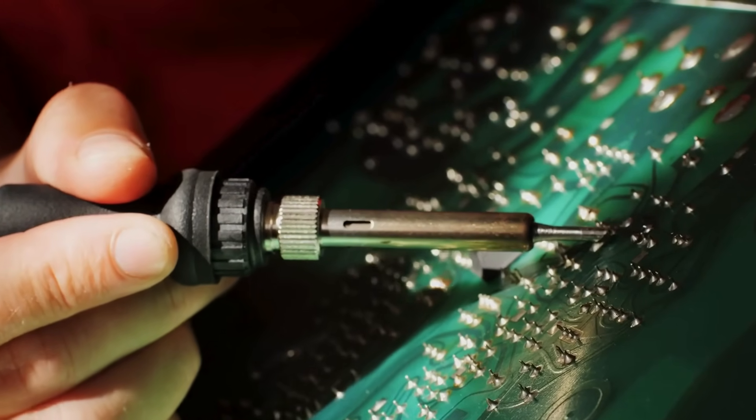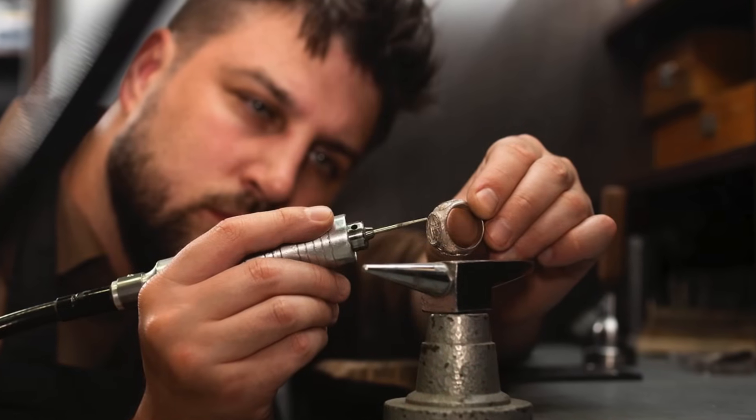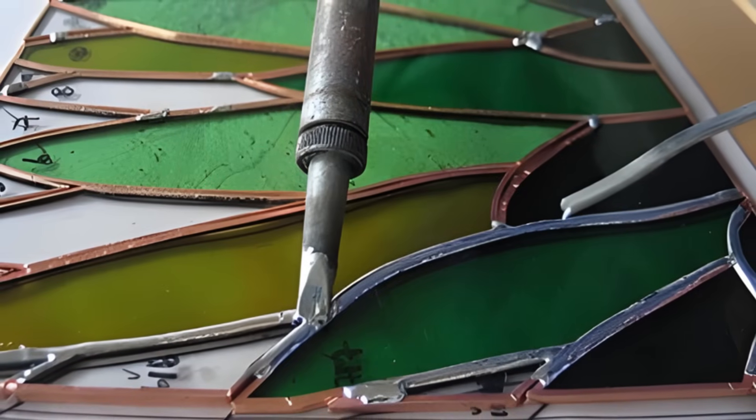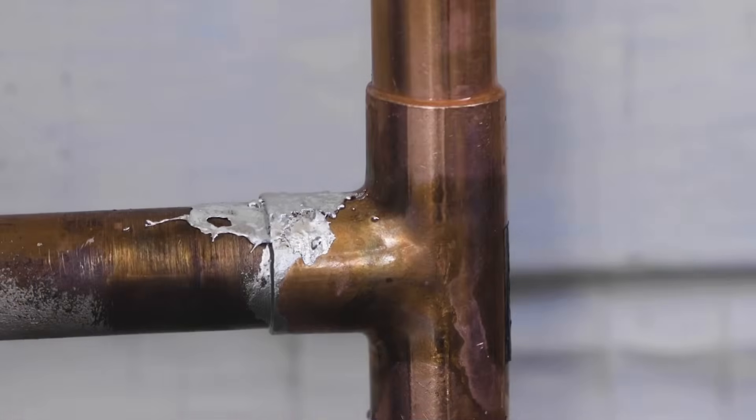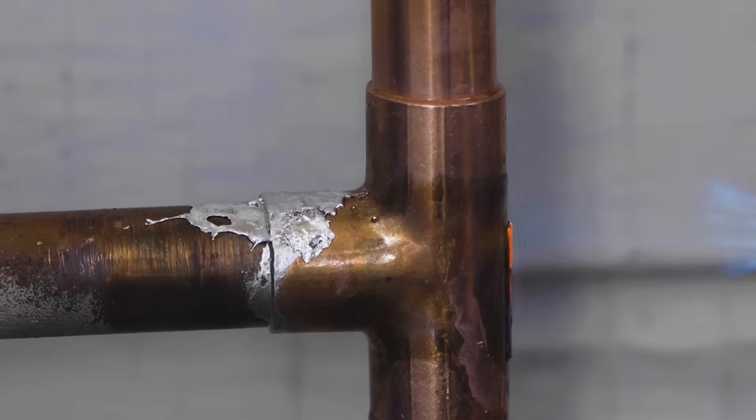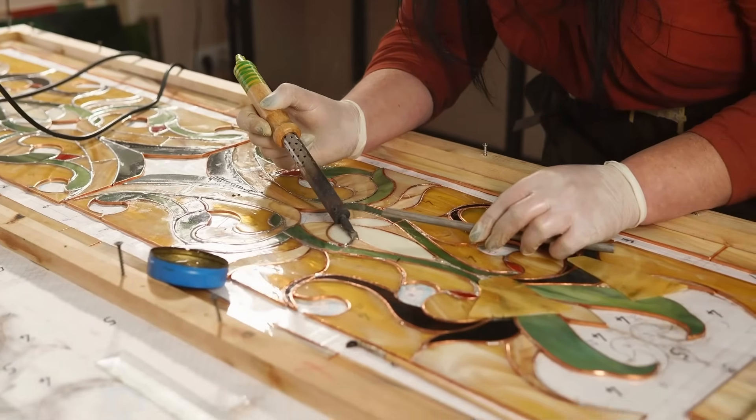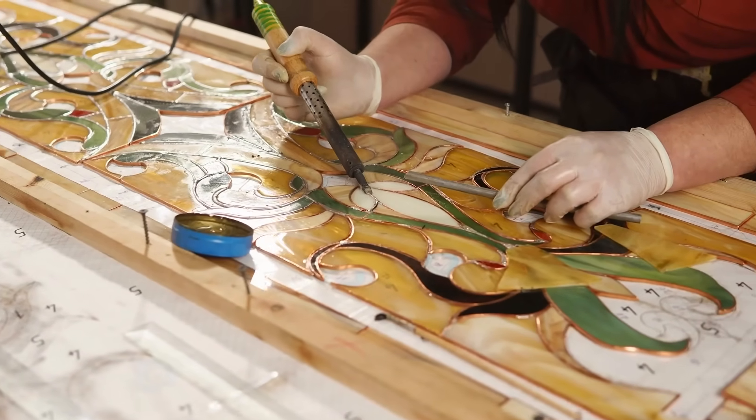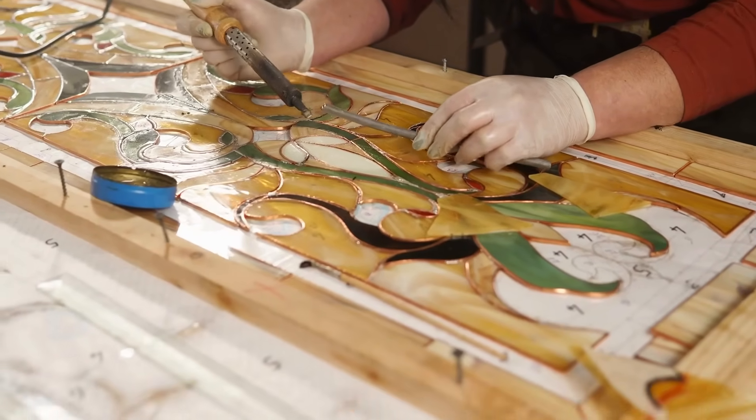But soldering goes beyond electronics. Jewelers use soldering irons to join small metal pieces, artists use them for stained glass panels, and plumbers use high-heat soldering tools to seal copper pipes. It's a universal joining technique because it creates strong, reliable bonds without requiring the metal parts themselves to melt.